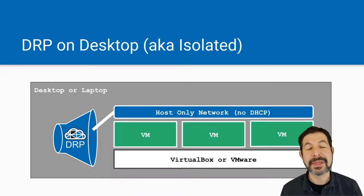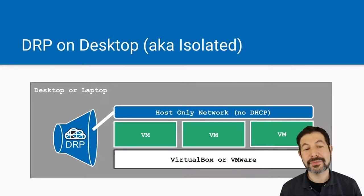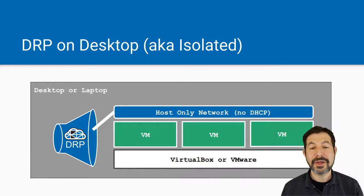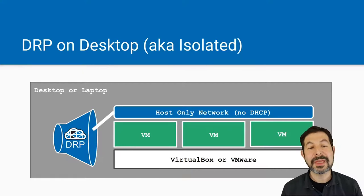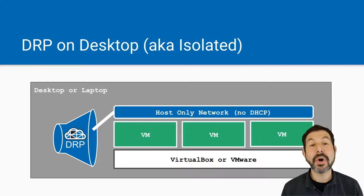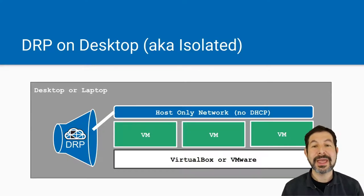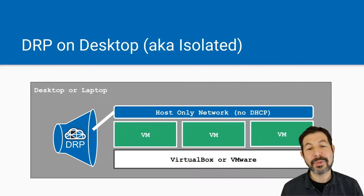Let's get to it. For Digital Rebar on your desktop, we'll install Digital Rebar and then build virtual machines in a host-only network so we can PXE boot them. We turn off DHCP in the VirtualBox or VMware system because Digital Rebar provides the DHCP system — it will only talk to that network. Everything will work just fine and we'll walk you through this process.